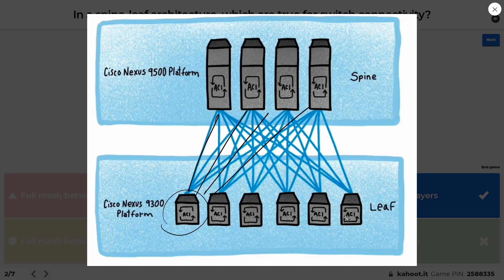The leaf switches are not directly connected to each other, and spine devices are not connected directly to each other. But there is a full mesh between the leaf layer and the spine layer. This creates equidistance and predictable throughput between any device in the infrastructure, because every leaf device has equal distance from every spine node in the topology.